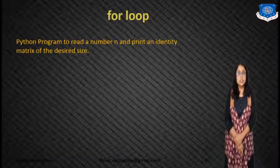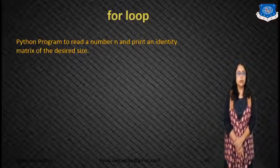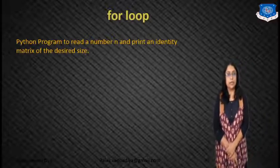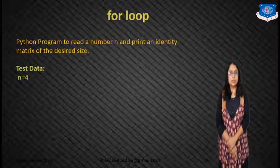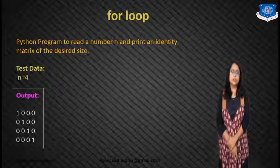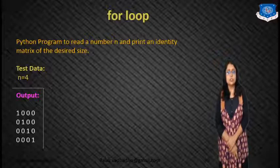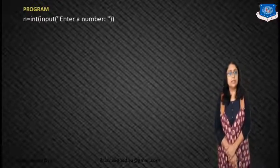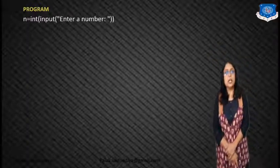To understand the for loop very well, we will discuss some code. The first program is a Python program to read a number and print the identity matrix of the desired size. For example, n equal to 4, then I want the output like this: the identity matrix of 4 cross 4. If the user enters 3, then I want the identity matrix of 3 cross 3. Now we will discuss the program. The user will enter the number: n equals integer input 'enter a number'.